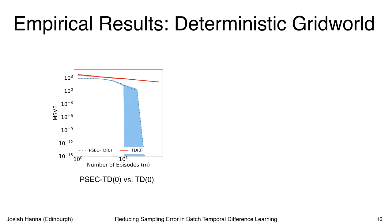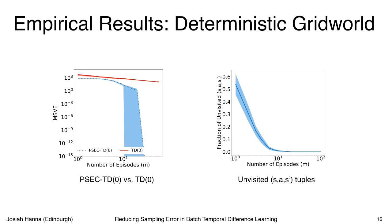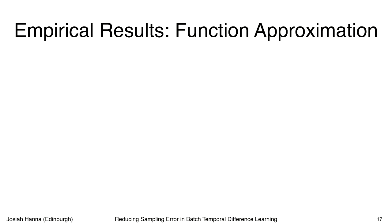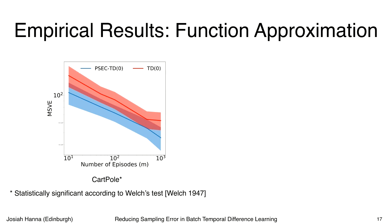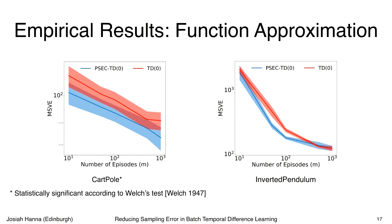There is a sudden drop in the curve corresponding to the point at which all possible state-action transitions have been seen in the dataset. When every state-action pair has been experienced — only possible in very small problems — PSEC temporal difference learning can perfectly learn the true value function if the environment is deterministic, whereas standard TD learning still falls short. We also looked at cases requiring more complex function approximation, using neural networks to represent the value function. Again, PSEC temporal difference learning consistently improves over batch temporal difference learning.